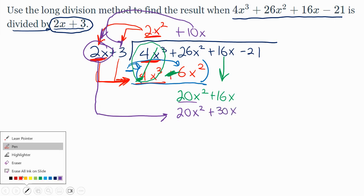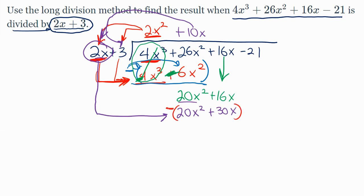And then just like elementary school, we need this value to be subtracted. So we distribute a negative into it, so that's going to be a negative 20 and a negative 30. Then as you add vertically, the first two terms will subtract to be a zero. And then we've got 16 minus 30, which should give me a negative 14x.